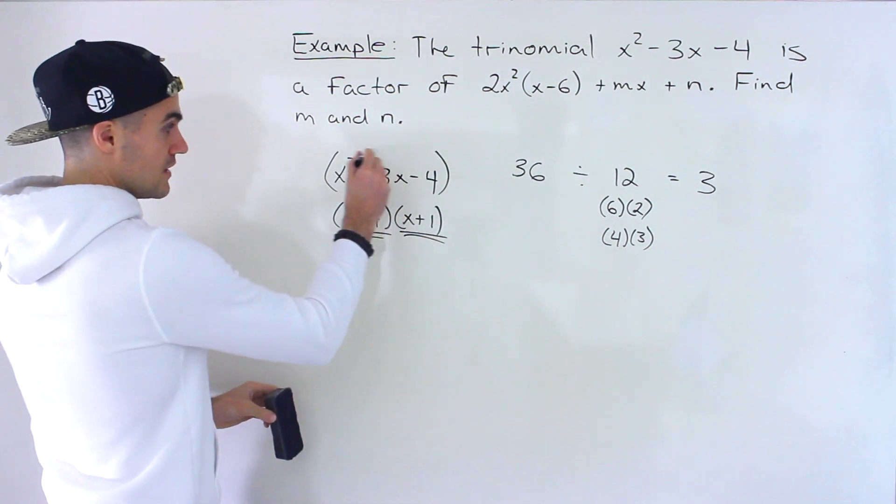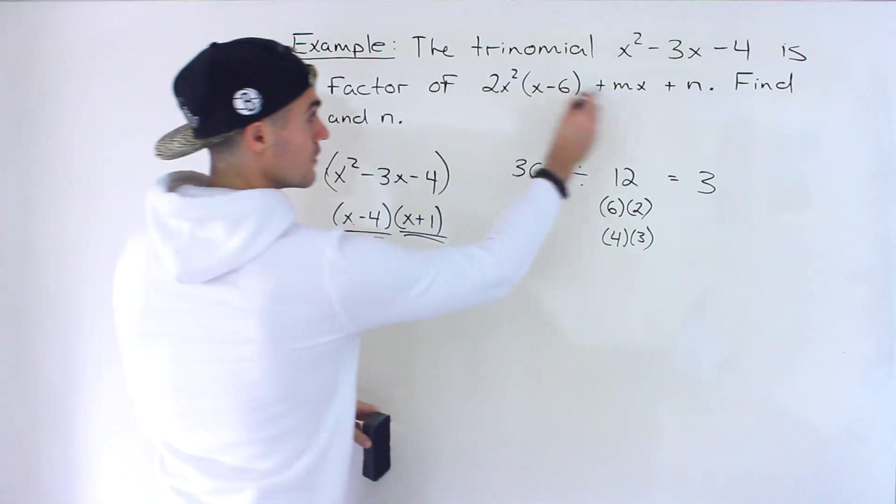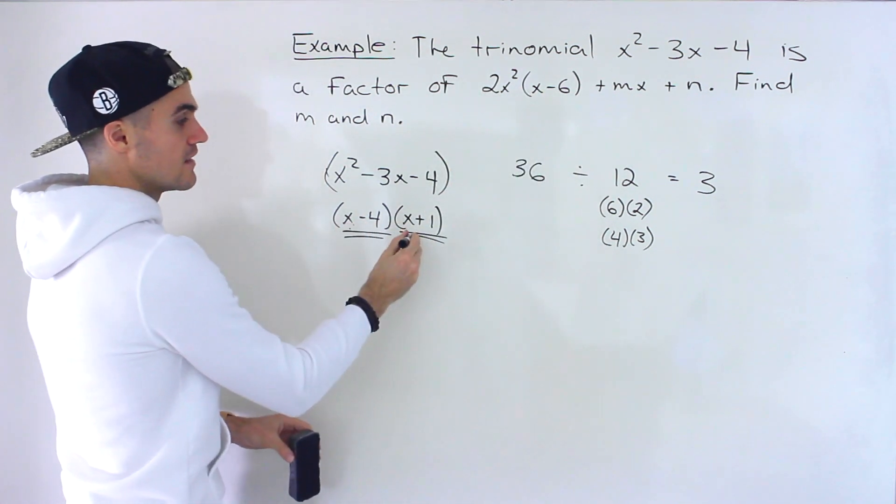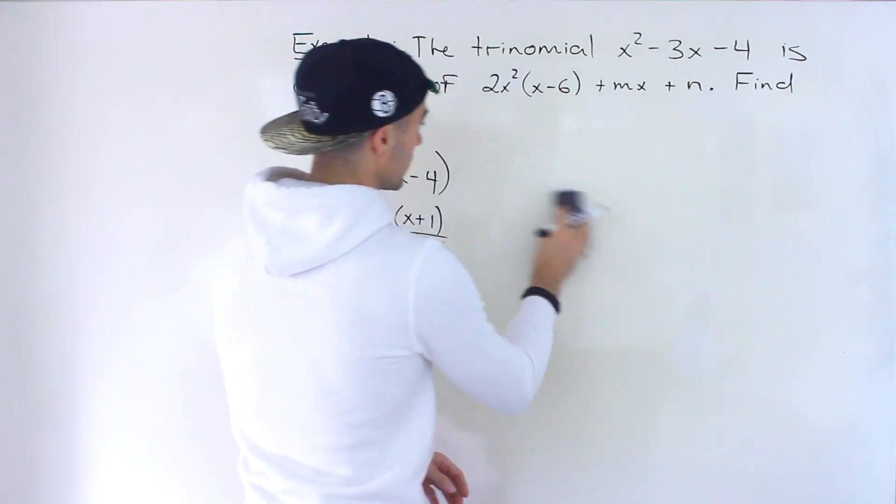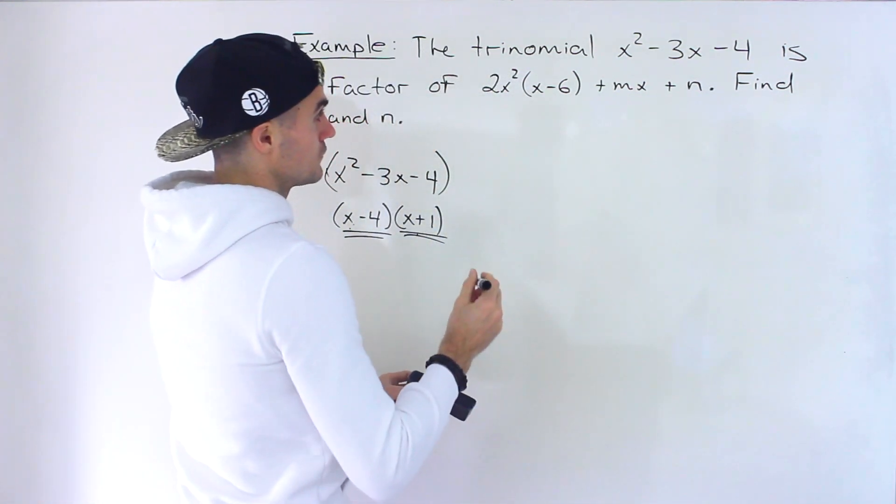So same thing here. If this is a factor of this then it means this and this are factors of that. And so that's pretty much the trick of the question. Then it becomes like a question we've done before.